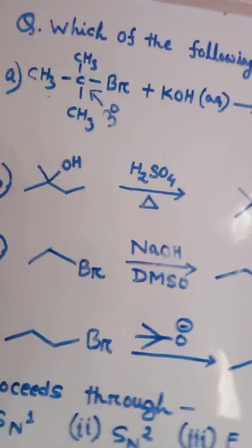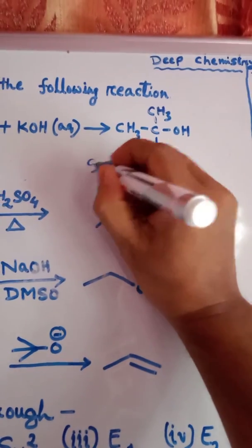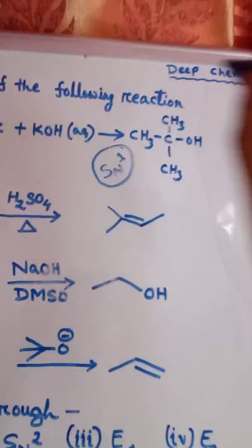In the first reaction, substrate given is 3 degree carbocation. 3 degree means SN1. So reaction proceeds through SN1.